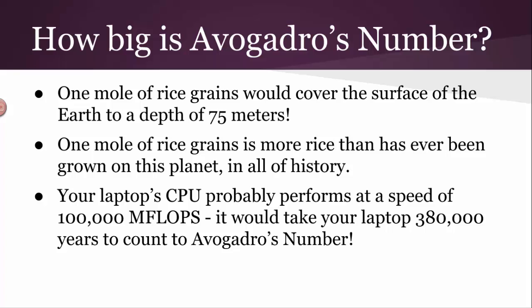If you have a laptop, it probably has a processor in there if it's one of the newer ones that performs at a speed of 100,000 mega flops. A flop stands for floating point operations per second. So what that means is if you asked your laptop to count, it could count up to 100,000 in one second. If you had your laptop count up to Avogadro's number, it'd take just over 380,000 years. That's how big that number is. And that's at 100,000 mega flops. That's 100 billion counts per second. Your laptop can count up to 100 billion in one second. And it would still take it 380,000 years to get to Avogadro's number. That's a big number. It's huge.